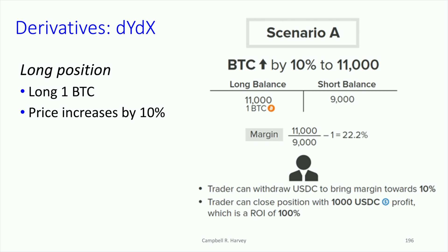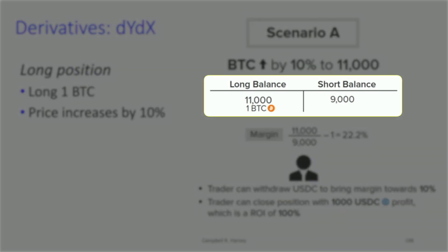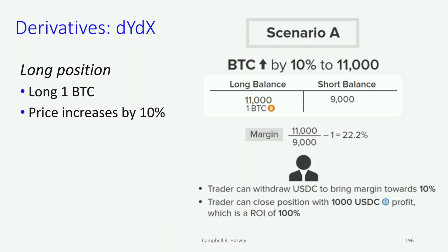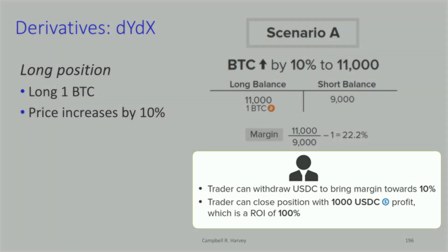Now let's consider what happens if the price goes up by 10%. We previously did an example where the price goes up by 5%, but let's look at 10%. So at 10%, the price of Bitcoin goes from 10,000 to 11,000. The long balance — the value of what you're going to get — is now 11,000. But the short balance is the same, because you committed to buy at 10,000 and you've already put 1,000 in. So the short balance is identical at 9,000. Your effective margin is 11,000 divided by 9,000 minus one: 22.2%. That's well above the initial margin.